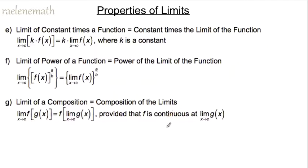Three more properties: the limit of a constant times a function equals the constant times the limit of the function — this constant is just a vertical scaling of the graph. The limit of a power of a function says you can swap the order of raising f(x) to an exponent and performing the limit. The same is true for a composition of any outer function — you can swap the order of the function and the limit.